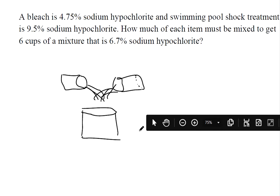How much of each item must be mixed to get six cups? This final mixture needs to be six cups at 6.7% sodium hypochlorite.